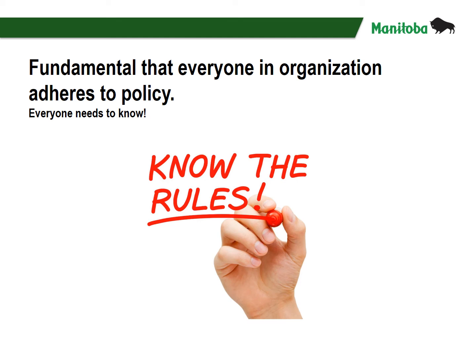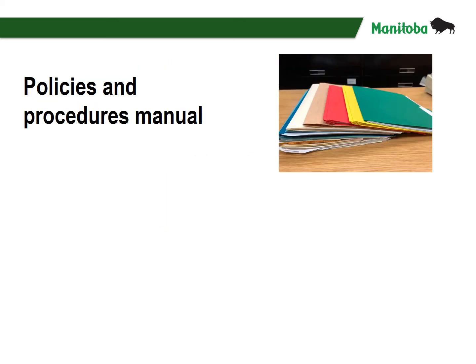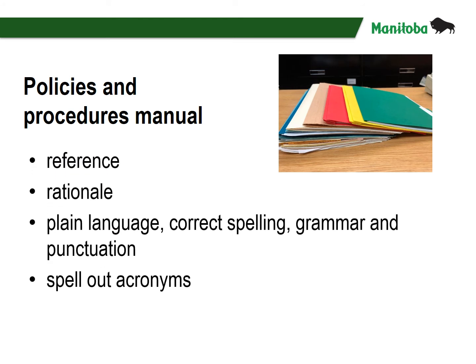There is no one manual format. It is fundamental that everyone adheres to policy, so think in terms of function. Make it easy to navigate, simple to use, appealing, and easy to read. You can use white space, bullets, or numbered lists. Each policy should have a reference, including the original meeting date and motion. Electronic options will make it easy to be searchable. Providing a rationale will give context to why it was formed and other background information.